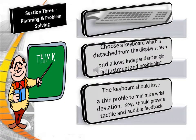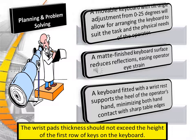Choose a keyboard which is detached from the screen display and allows independent angle adjustment and positioning. The keyboard should have a thin profile to minimize wrist deviation. Keys should provide tactile and audible feedback. A removable keyboard with an angle adjustment of 0 to 25 degrees will allow for arranging the keyboard to suit the task and physical needs of the operator. A matte finish keyboard surface reduces reflections, easing eye strain. A keyboard fitted with a wrist support at the heels of the operator's hand minimizes hand contact and sharp table edges. Wrist pad thickness should not exceed the height of the first row of the keyboard.